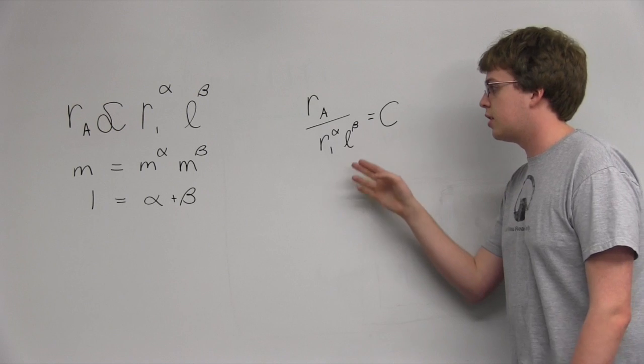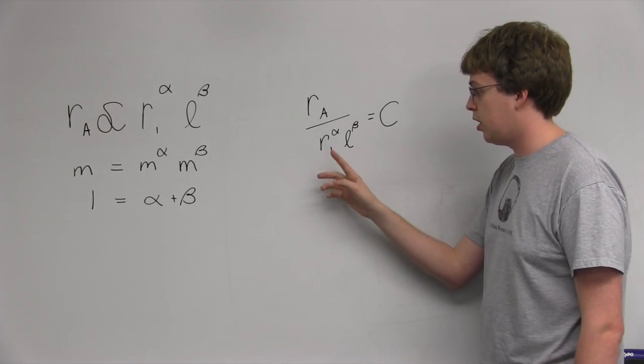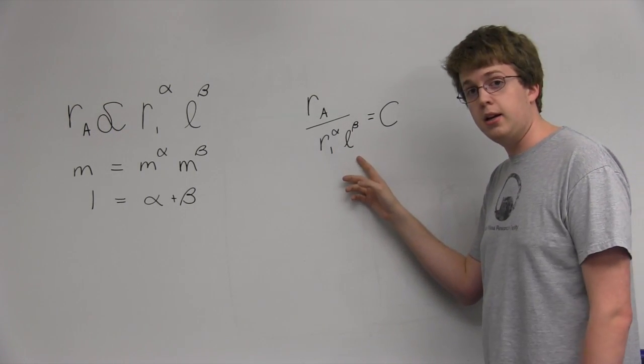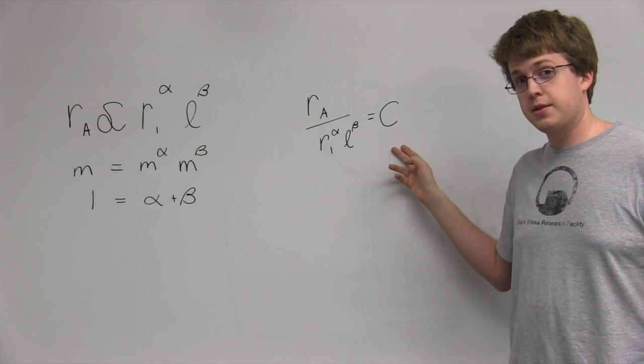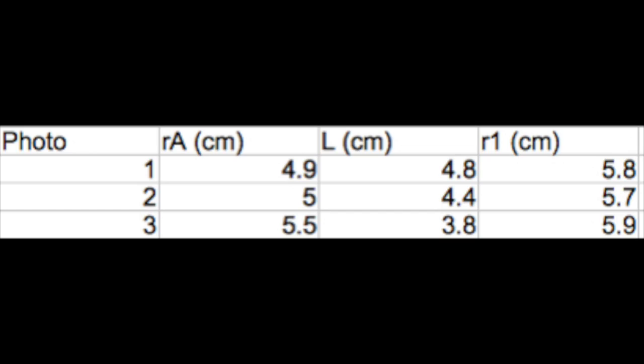However, what we can say is that RA over R1 to the alpha times L to the beta should equal a constant of some sort. It describes the system as a whole. Now, logically, RA should grow with R1 and shrink as L grows, which means that we want alpha to be positive and 1 minus alpha equal to beta to be negative. Unfortunately, that leaves the exponent with some freedom.